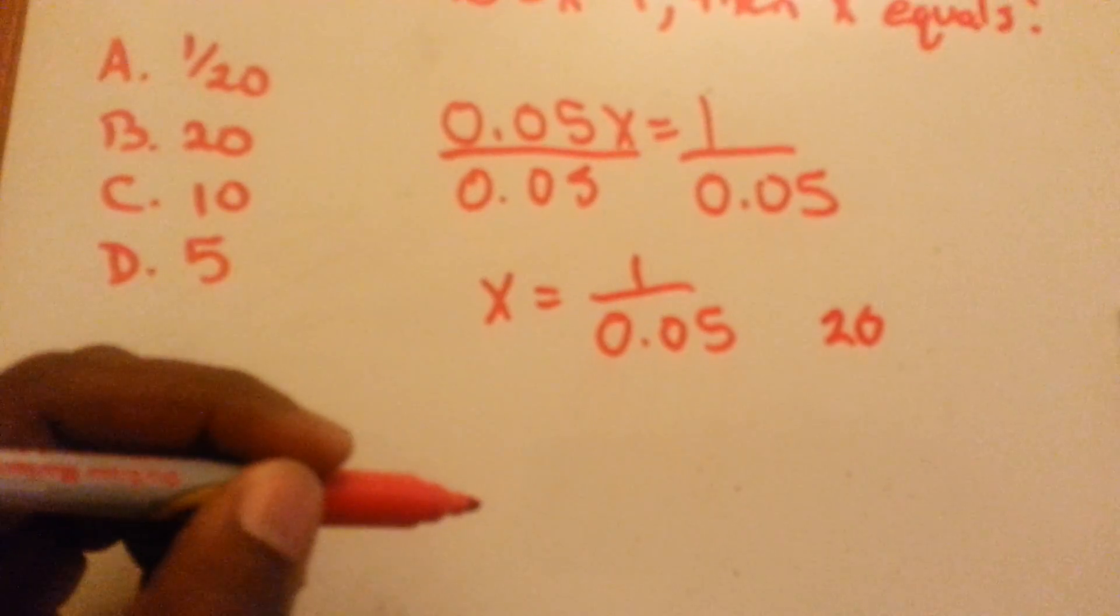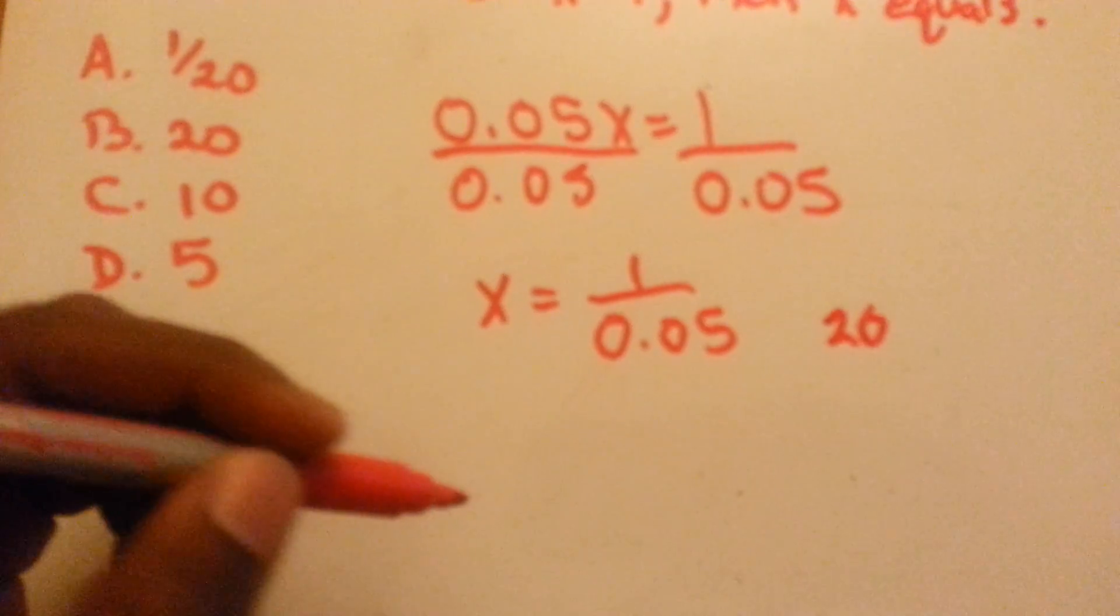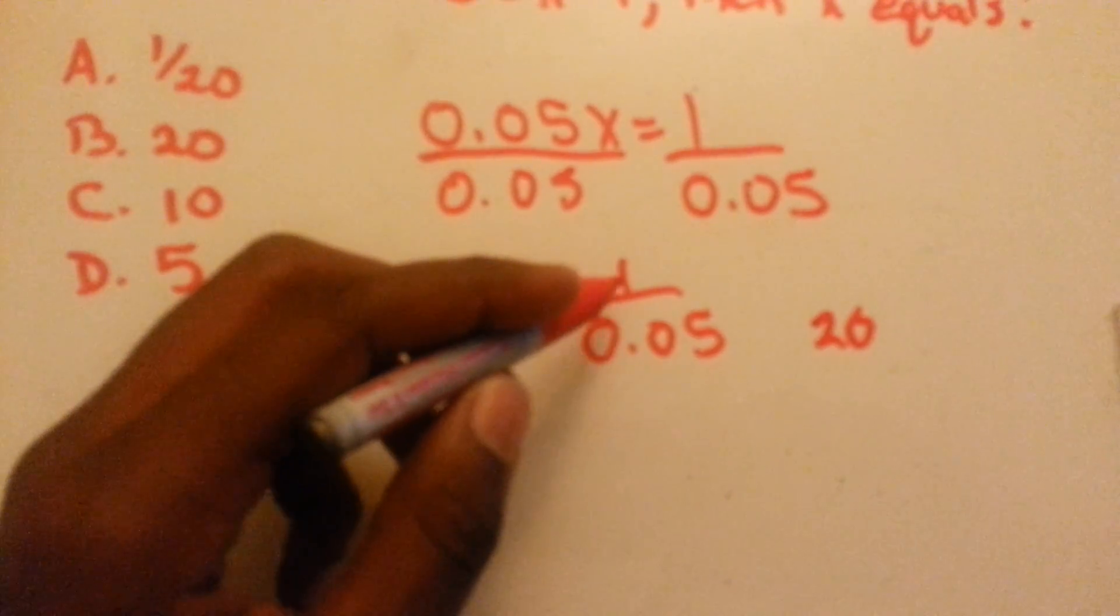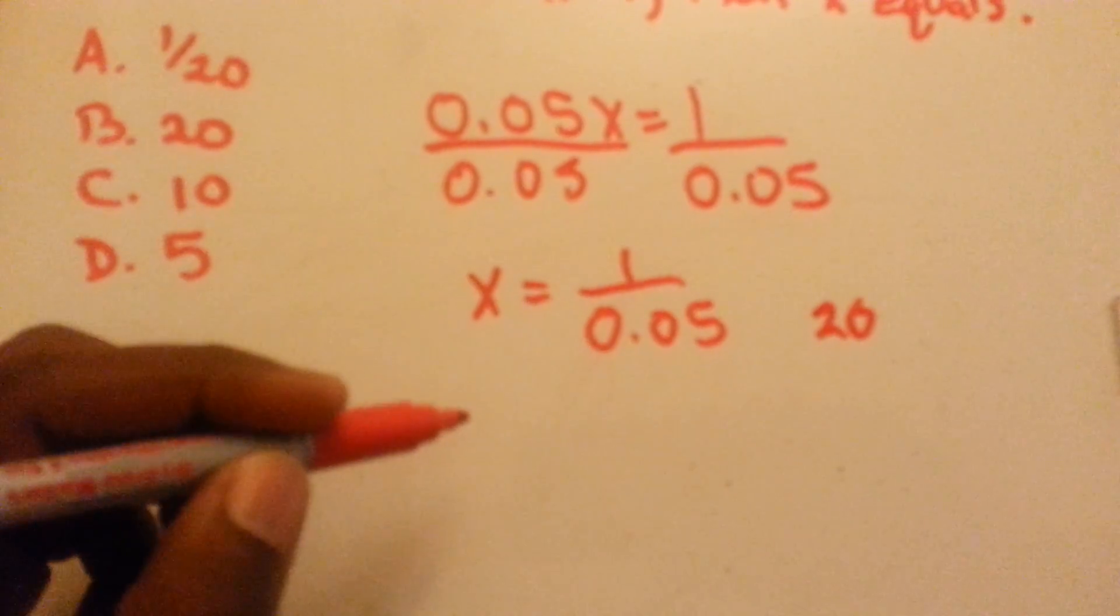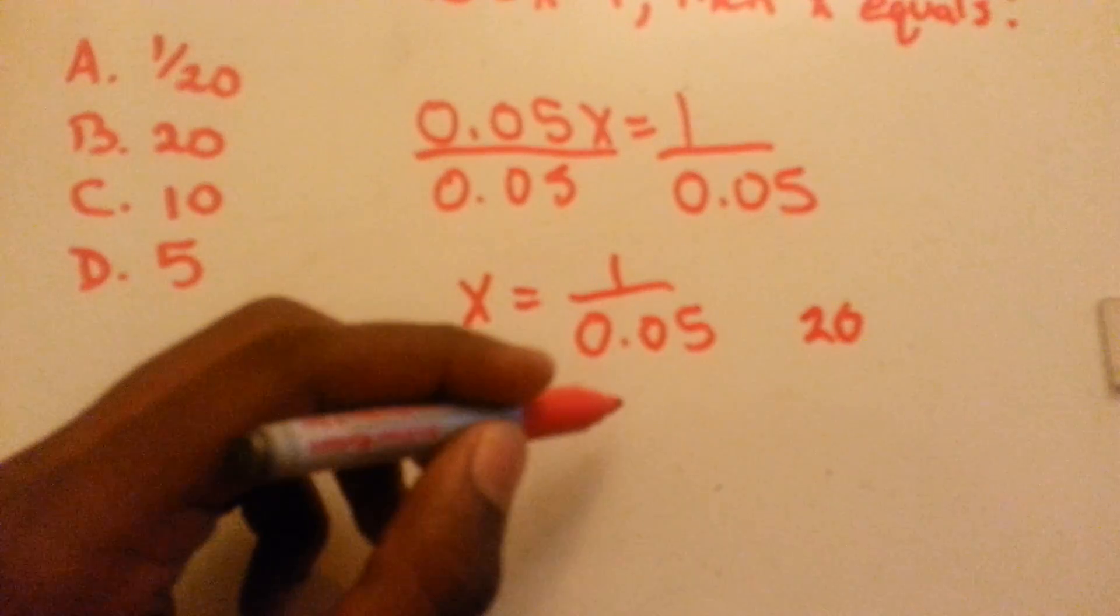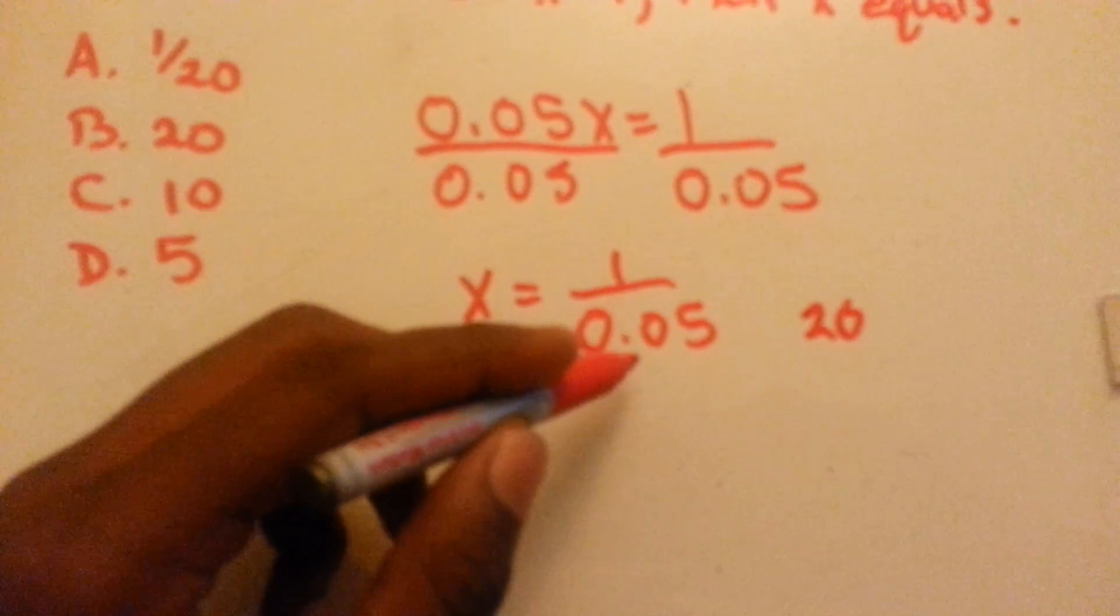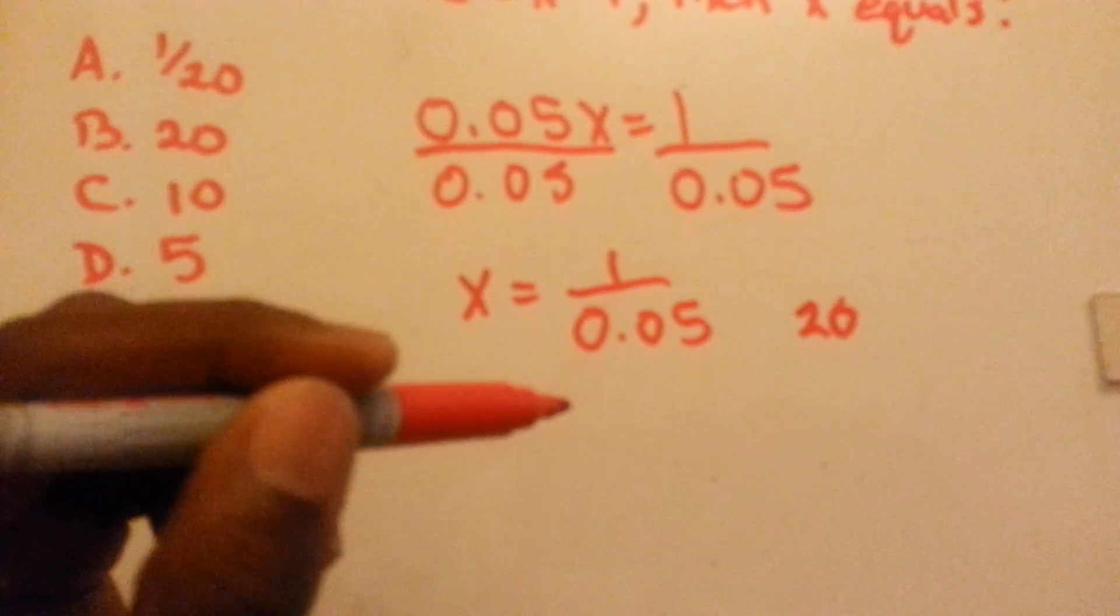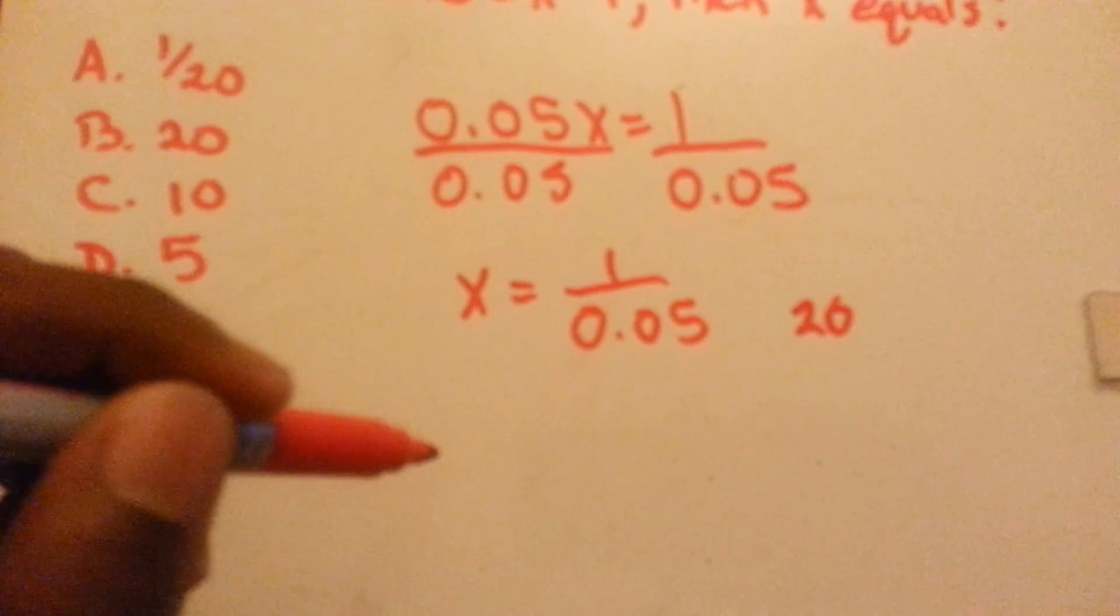But if you want to do the math to figure out the answer, we have 1 divided by 0.05. To make it easiest so we don't have to work with decimals, we can multiply both numbers by 100.